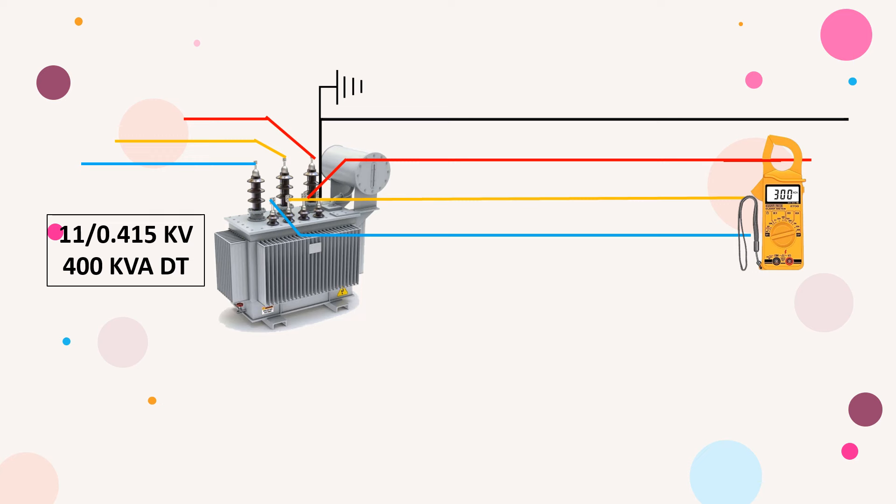Let's suppose you are standing near this transformer and you try to measure the load in all phases. In R, Y, and B you get values like 300, 270, and 350 ampere.